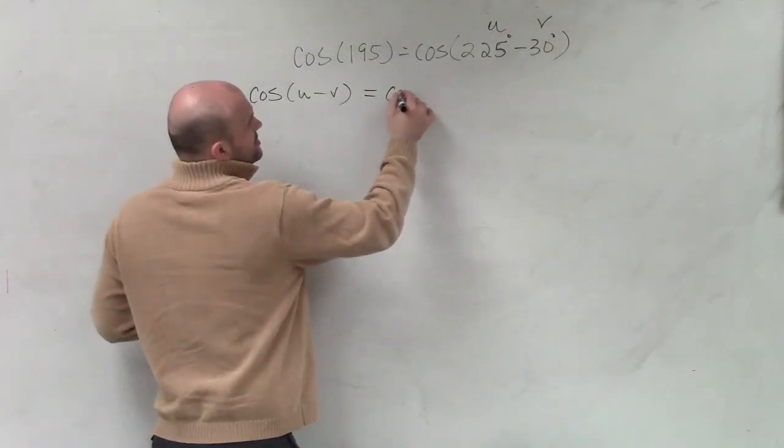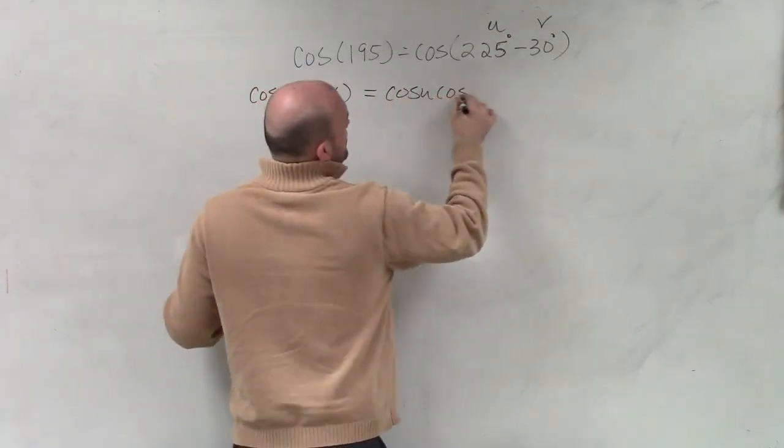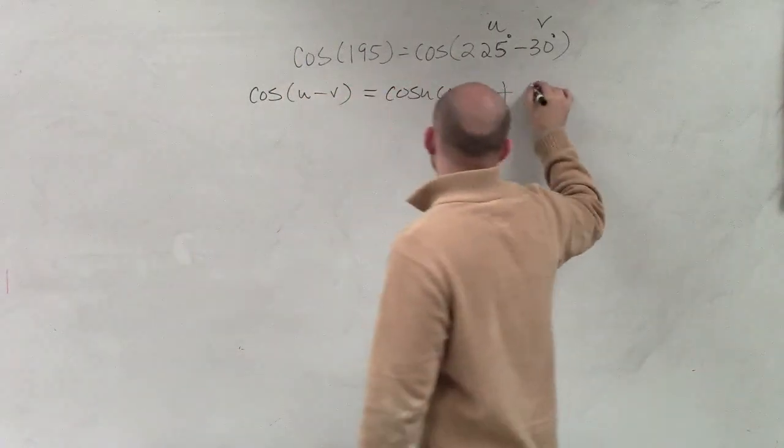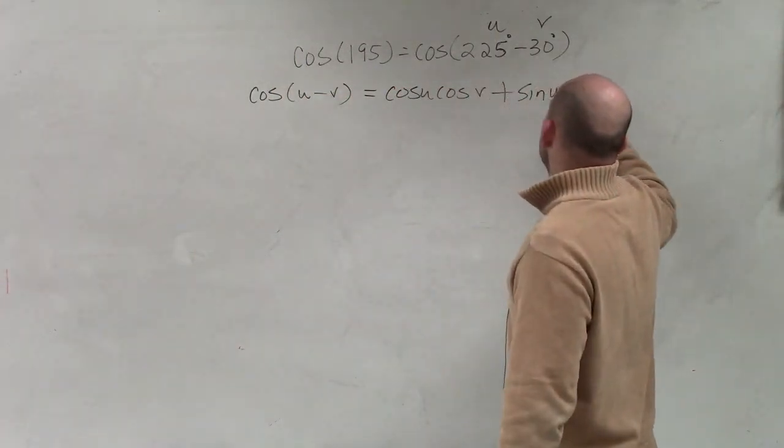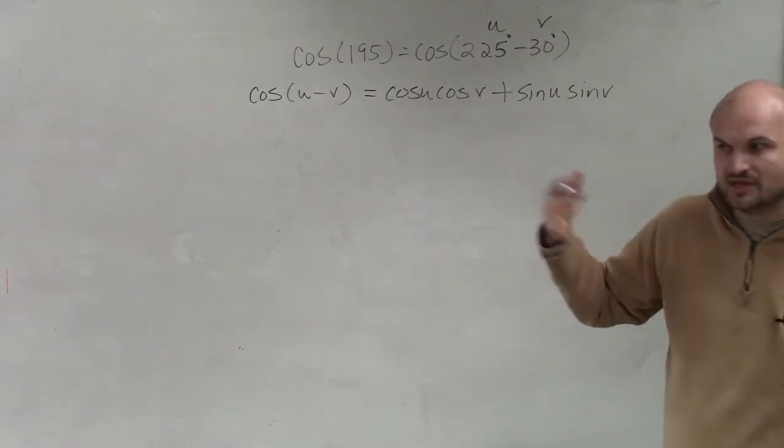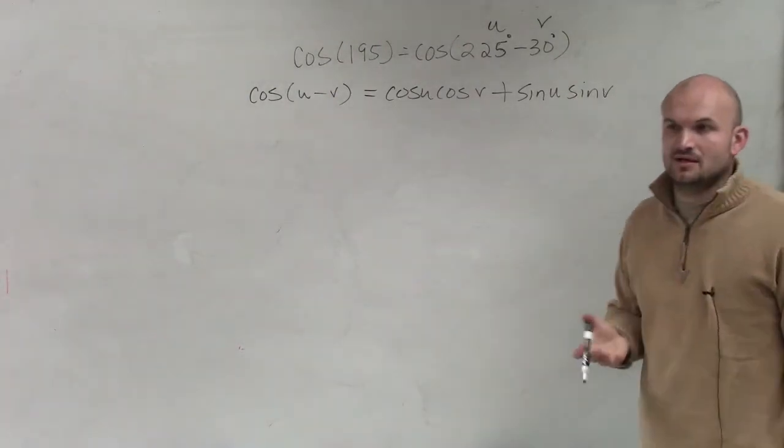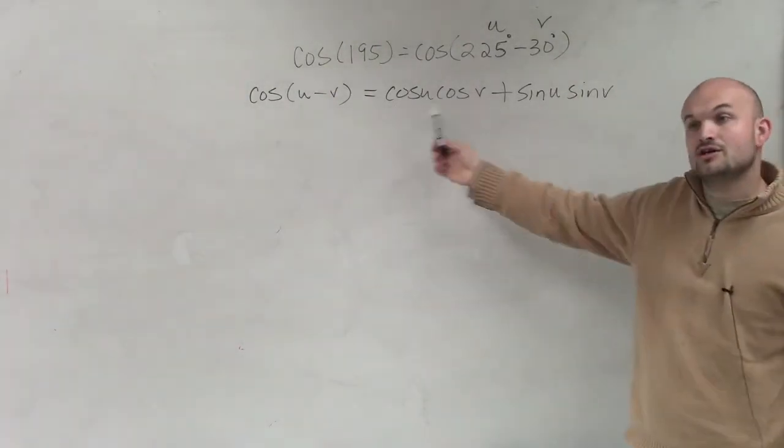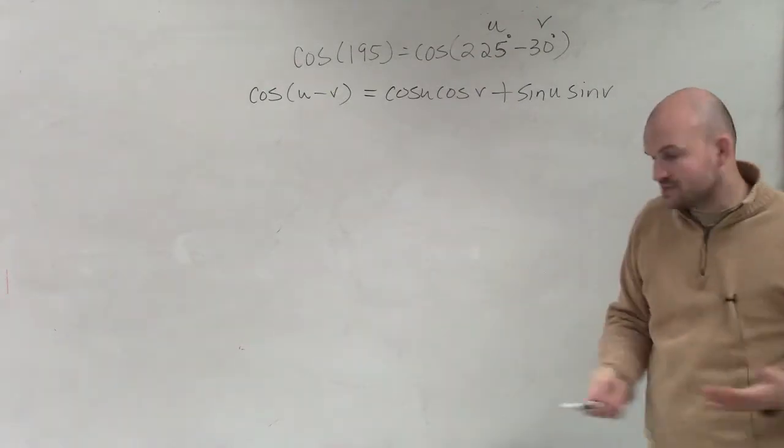Anyways, for the cosine function, it's cosine of u times cosine of v plus sine of u times sine of v. So it is going to be a little bit of trickiness when you guys are doing this to notice that, yes, cosine is the opposite, but you guys will have these formulas with you.